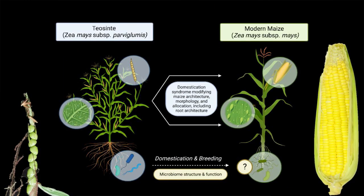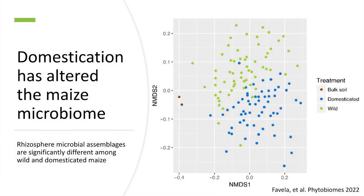Here I'm showing some major changes between teosinte and maize: different growth patterns, differences in seed production, and difference in root structure. What does that mean for the microbiome? In this plot, each point represents a microbiome sample, with closer points having more similar microbial assemblages. Starting from the bulk soil microbiome, microbes recruited by different teosinte genotypes were distinct from microbial assemblages recruited by domesticated lineages of maize.